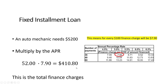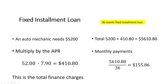So the total finance charges will be $410.80. To get his monthly payment — with 36 payments — all I have to do is add how much he's going to borrow plus his finance charges and then simply divide that by the number of payments, 36 payments, and he will be paying $155.86 a month.